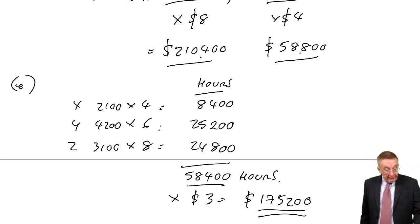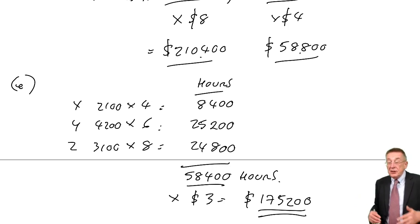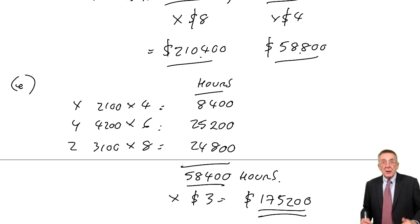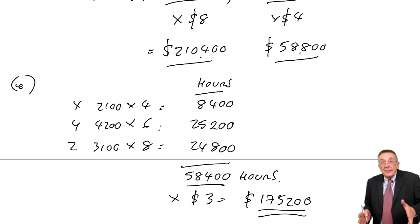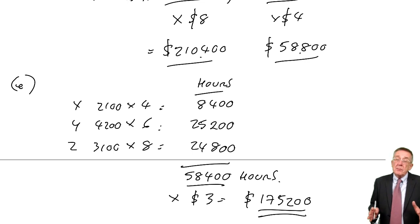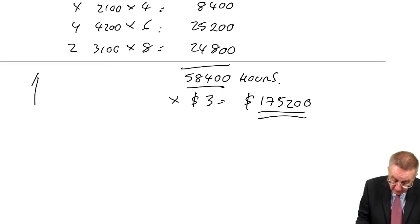And so there we are. In practice, clearly, there'll be more budgets—variable overhead budgets, fixed overhead budgets, and so on. Then ultimately, we could put them all together and produce a budget profit statement. All those little budgets we've done here are called functional budgets.